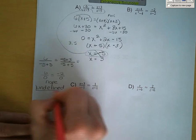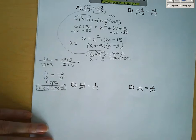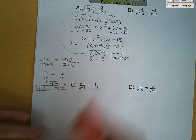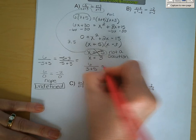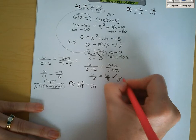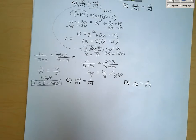Now let's plug in 3 for x. We've got 6 over 3 plus 5 is equal to 3 plus 3 over 3 plus 5. So we've got 6 over 8 is equal to 6 over 8 — those are the same numbers, so yes, that is the solution. So 3 is the solution and negative 5 is extraneous.